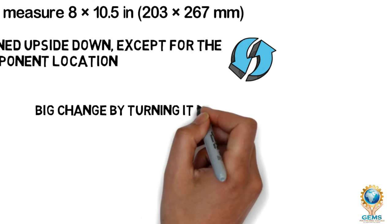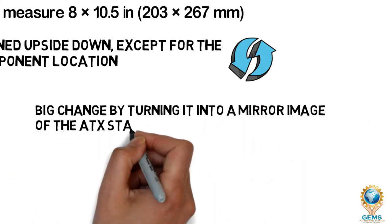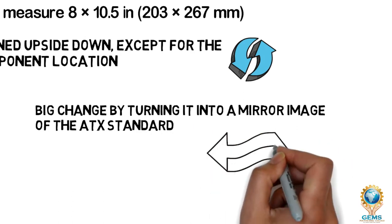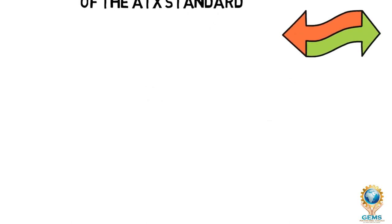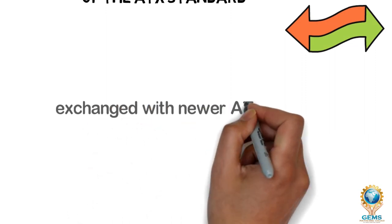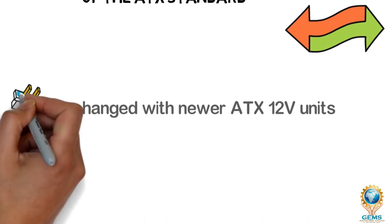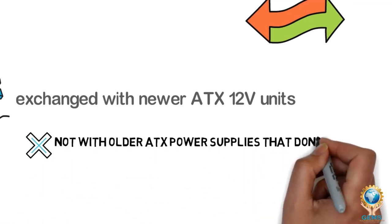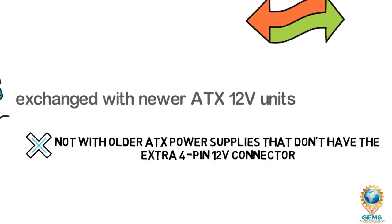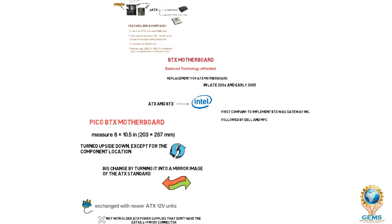Later, the BTX form factor underwent a big change, turning it into a mirror image of the ATX standard, making new motherboard designs of both standards incompatible. BTX motherboards are left-right mirrored compared to ATX, not upside down, making the mounting side of the BTX motherboard the opposite side of the case. BTX power supply units can be exchanged with newer ATX 12V units, but not with older ATX power supplies that don't have the extra 4-pin 12V connector. Initially, only Gateway and Dell offered computers with the new BTX format.